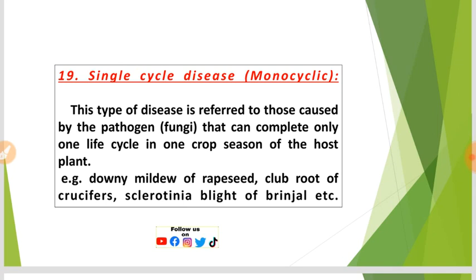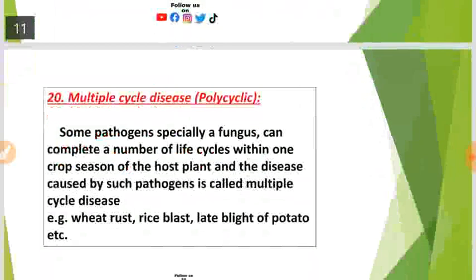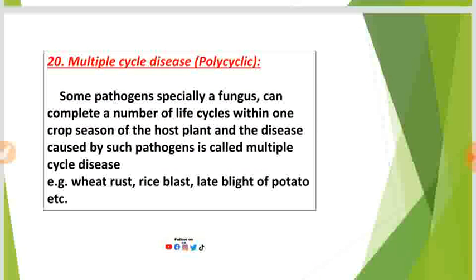Examples of monocyclic diseases include downy mildew of cabbage seed, club root of crucifers, and Sclerotinia blight of brinjal. These are single cycle or monocyclic diseases — one life cycle in one crop season.